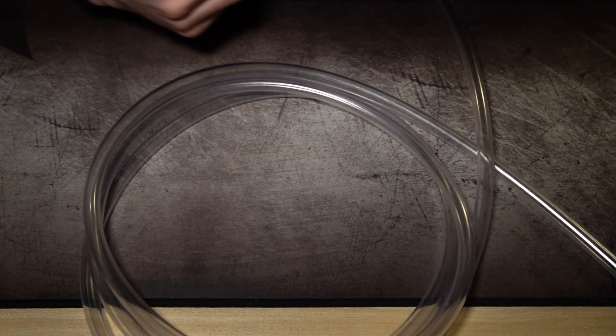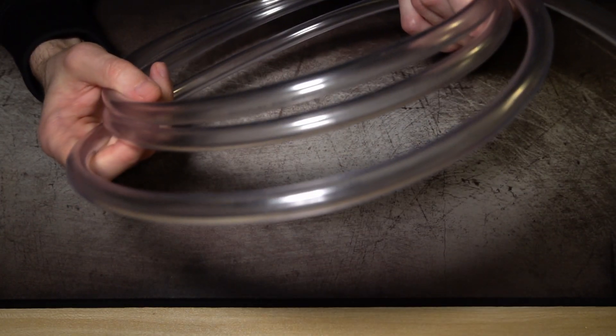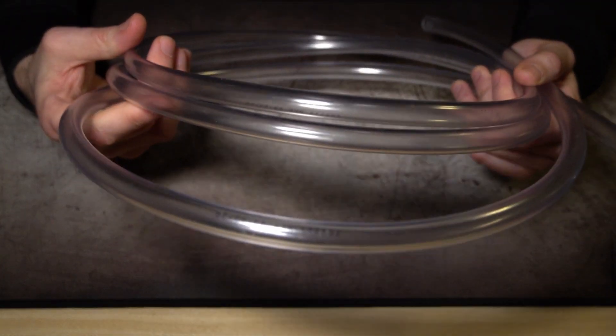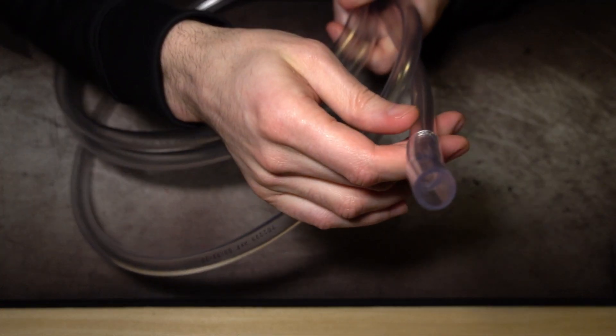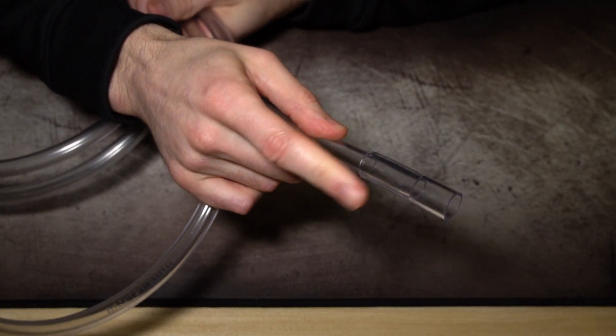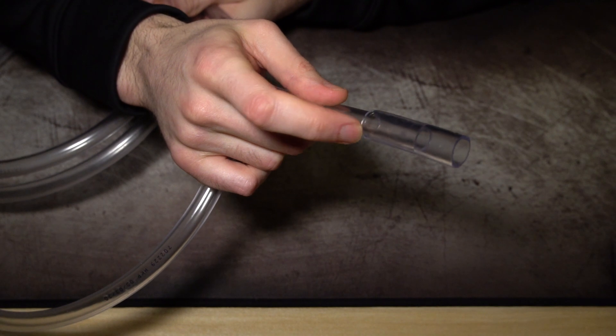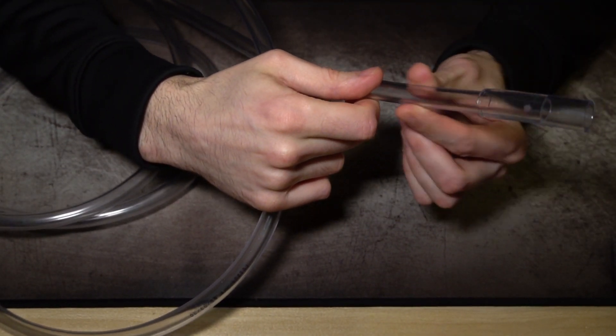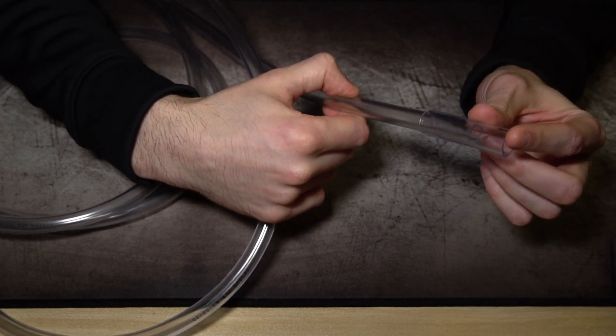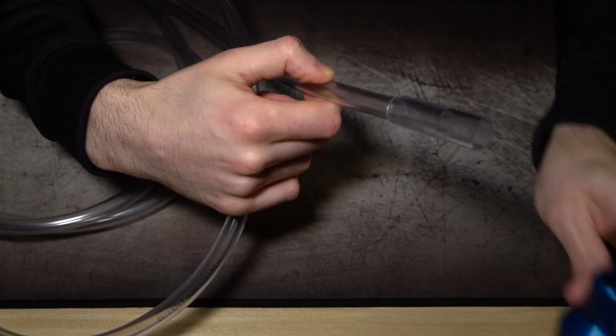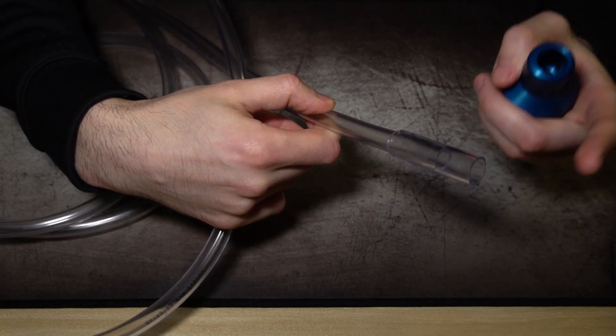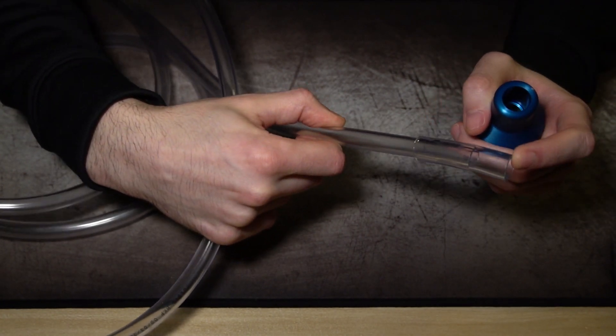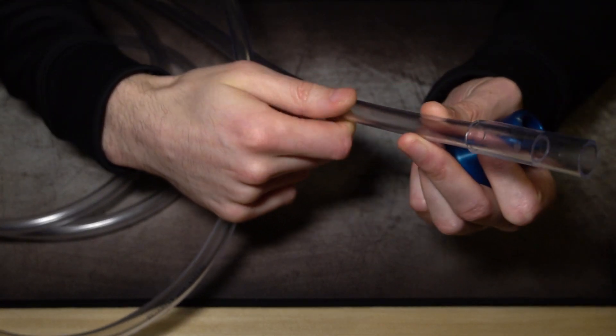This one that I got is a three-eighths of an inch inner diameter and a half-inch outer diameter. You're also going to need a half-inch inner diameter to go into the three-eighths diameter, because if you just use the three-eighths diameter, it will go in but will be very loose and you don't want that. I believe it's a half-inch that you want to get to go into the three-eighths.